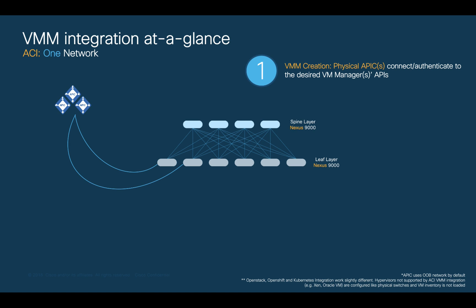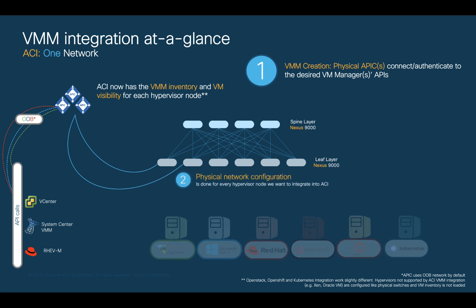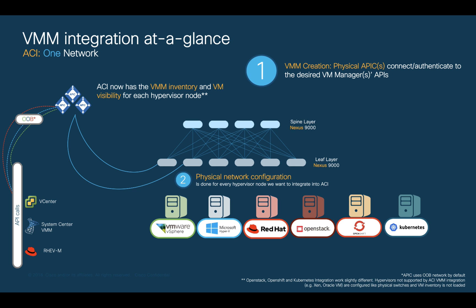This provides APIC with the ability to connect and authenticate via its out-of-band management interface against the most popular Virtual Machine Managers in the market through their APIs, and therefore get complete visibility into their inventory at the host and VM level. Next, we will configure the physical network for each hypervisor host, just the way we learned in the previous episode, this time including the VMM domain in the AEP you will use. This will allow us to configure the logical network once, centrally through the APIC, and distribute that configuration consistently across multiple servers and hypervisors, reducing potential errors and time.